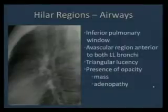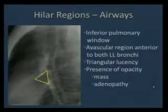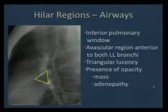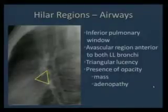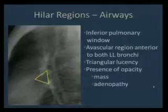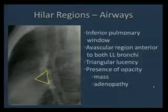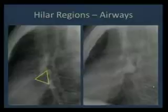An important clear space below the left main bronchus is the triangular lucent area named the inferior pulmonary window. This area should always be clear. Any opacity seen in that triangular area is completely abnormal. Here is a patient with lymphadenopathy projecting over the inferior hilar window, located in the subcarinal region.